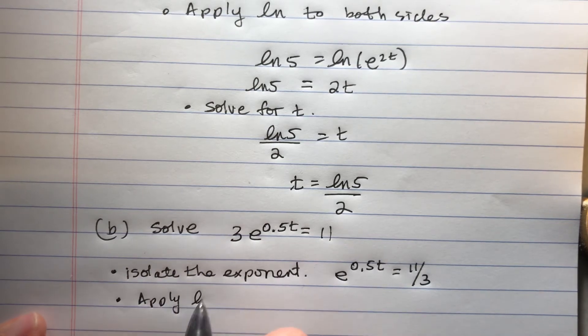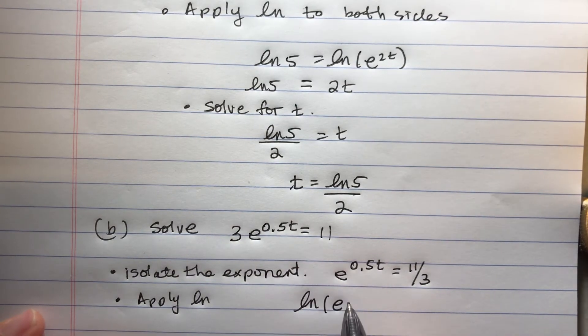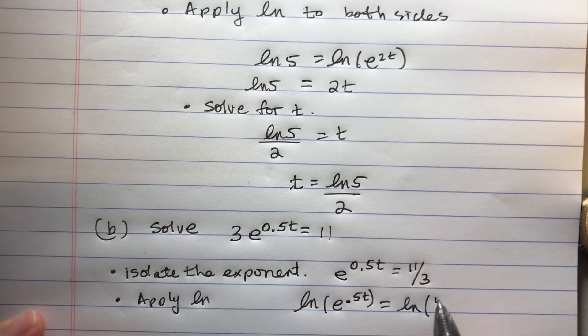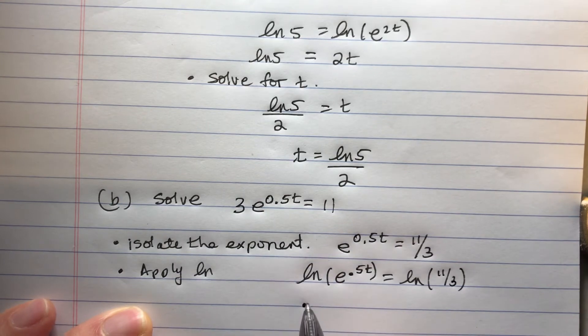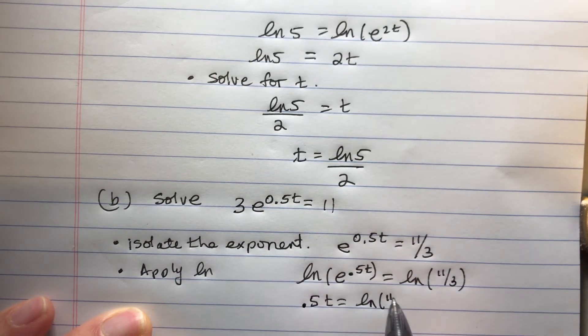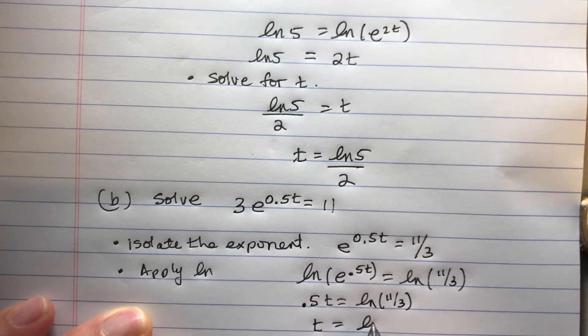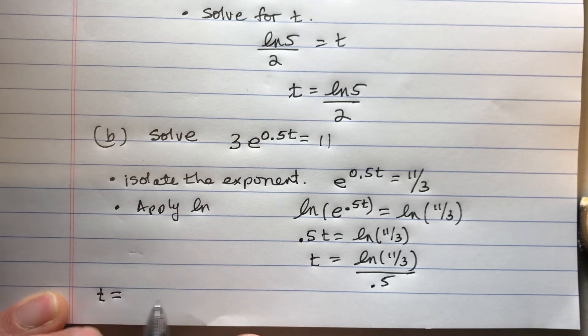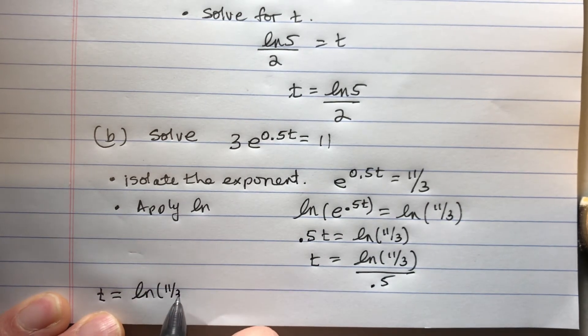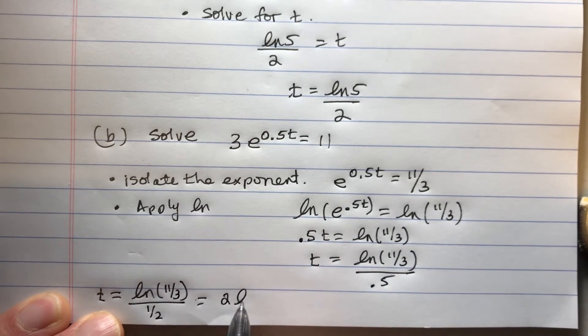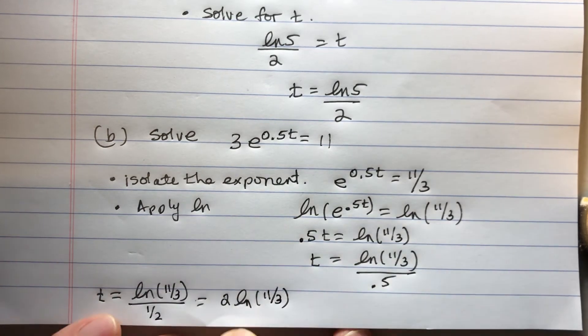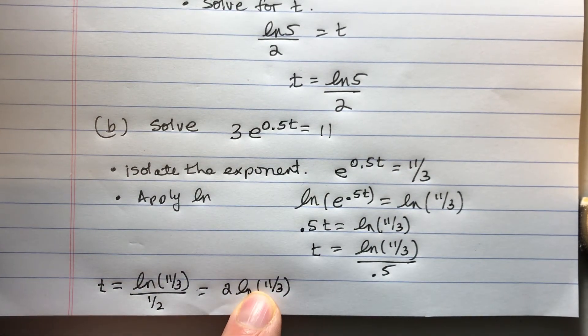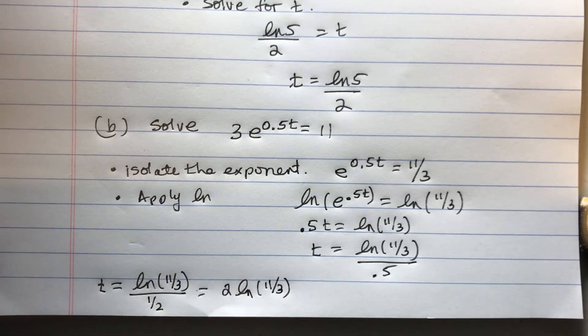Apply ln. So I'm going to get ln e to the 0.5t equals ln 11 thirds. ln and e cancel out. I get 0.5 times t equals ln 11 thirds. And there you go. That looks pretty good to me. There's a couple ways you can look at this. For one thing, 0.5 is a half. So it might look better if I did this. And some people might say they don't like ln of fractions. They might want to expand this as ln 11 minus ln of 3 all times 2. But I think that's good enough.